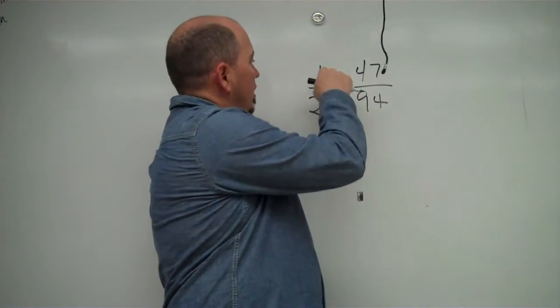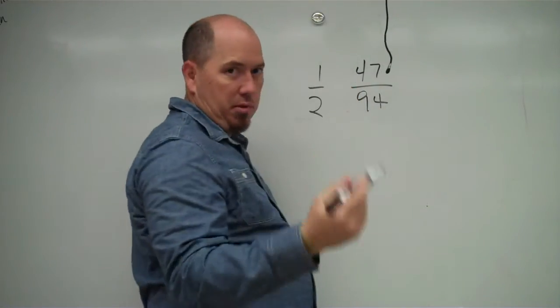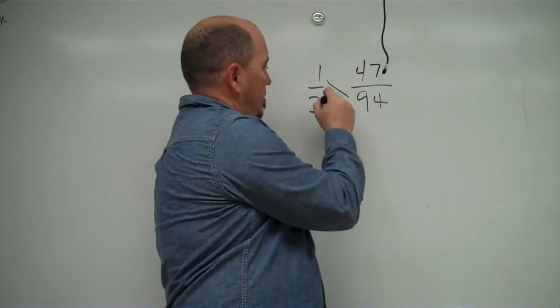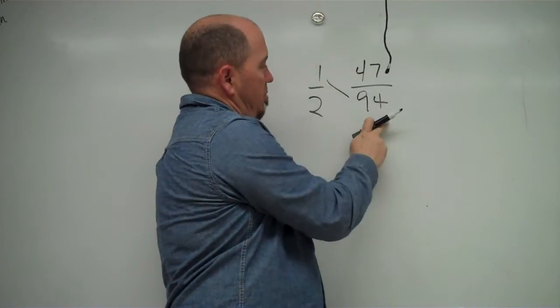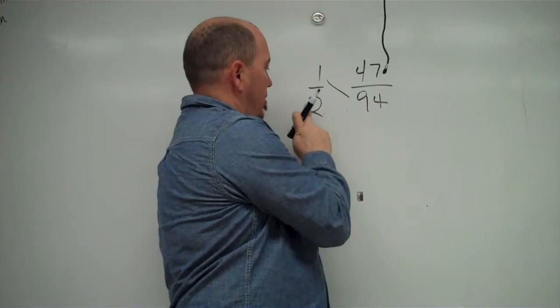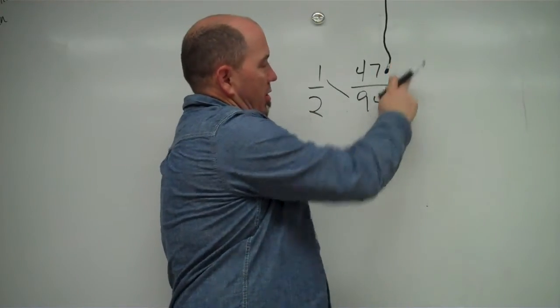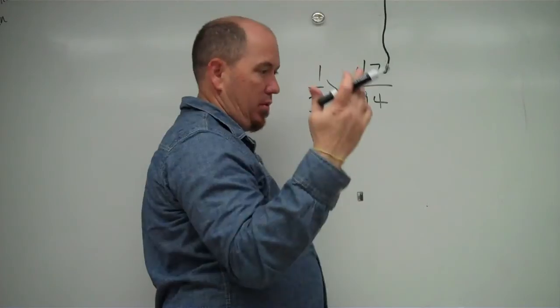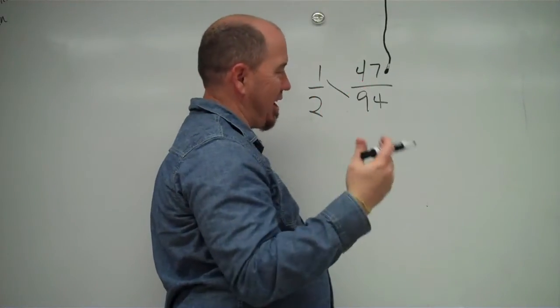So let's see. I'm going to use the cross multiplication approach. So I'm going to cross multiply. I'm going to take this numerator, multiply by this denominator. And then I'm going to multiply this denominator by this numerator. And that will tell me if they're equivalent fractions, if they're the same.